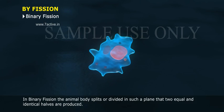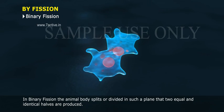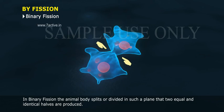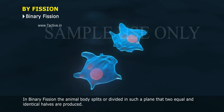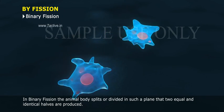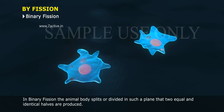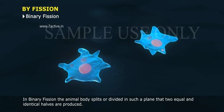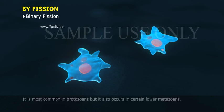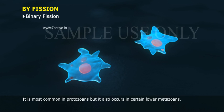In binary fission, the animal body splits or divides in such a plane that two equal and identical halves are produced. It is most common in protozoans but it also occurs in certain lower metazoans.